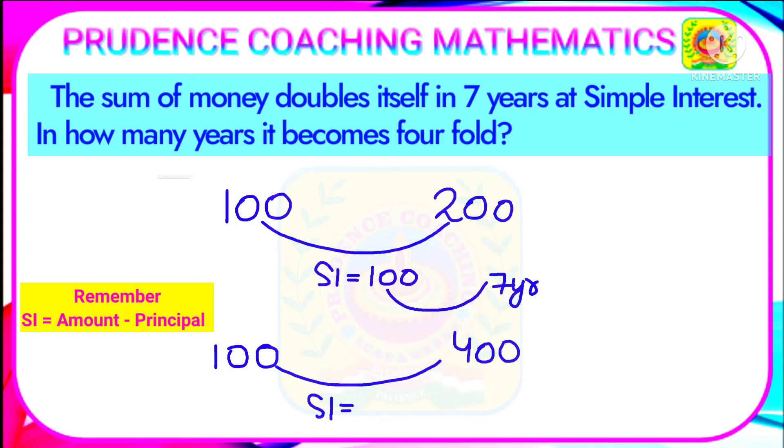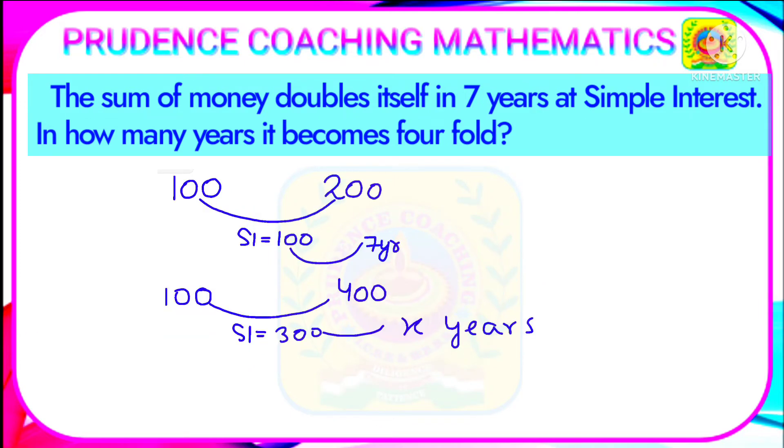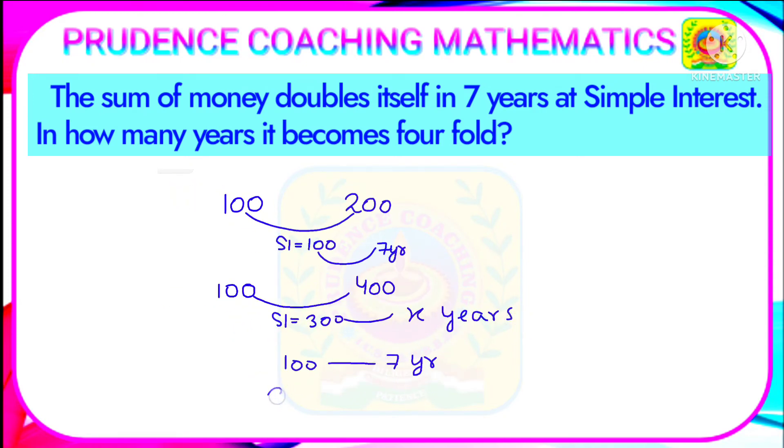So according to this, we are getting hundred in seven years. So if SI is three hundred, then how many years? So hundred into three is three hundred in SI.